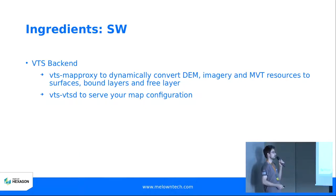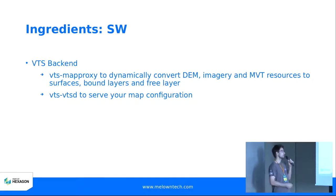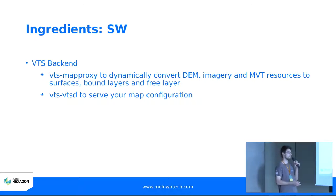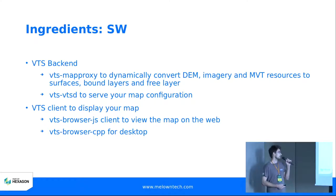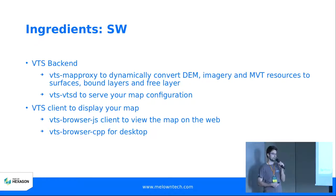Then we have VTS VTSD, which basically serves all the static data. In our case, with just the globe and the vectors, it will serve the map configuration — basically a configuration file you write where you specify which layers should be displayed and how they should be displayed together. Of course you don't only need the backend; you also need the front end, where you can choose between VTS Browser JS — the web client written in JavaScript using WebGL — which we will use in the GitHub repo.